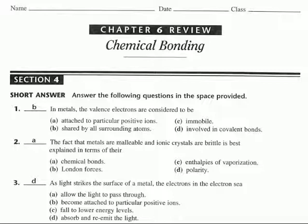Light does not — option A — pass through a metal. The electrons do not allow light to pass through; the electrons absorb that energy. Just by adding energy, the electrons do not become attached to any particular positive ion. Remember, number one, attaching to a particular positive ion is not the way to go. We definitely don't fall to lower energy levels when we absorb light.